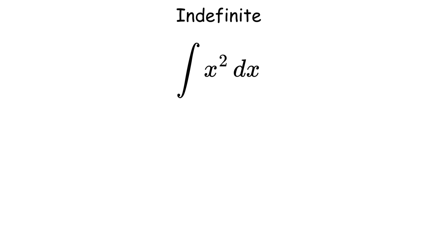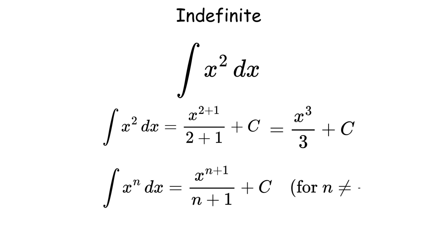But if the function is more complex like x squared, we add 1 to the power and divide by the new power. It turns out that to find the indefinite integral of any polynomial function, you just add 1 to each power and divide by the new power.